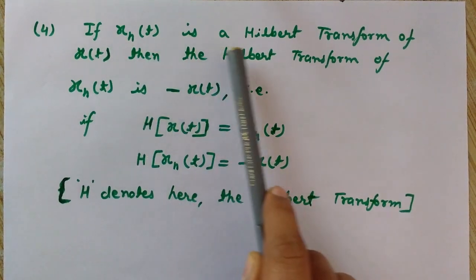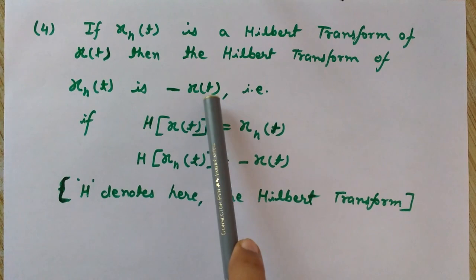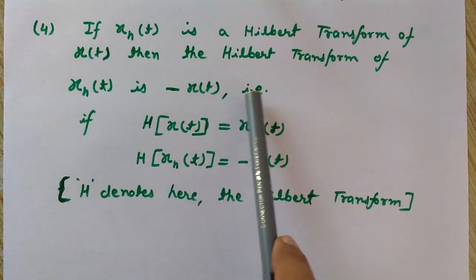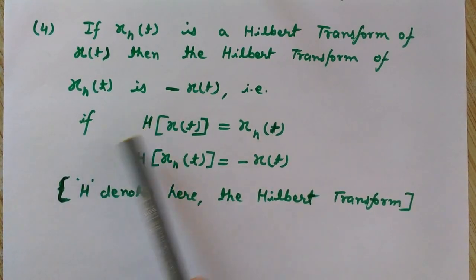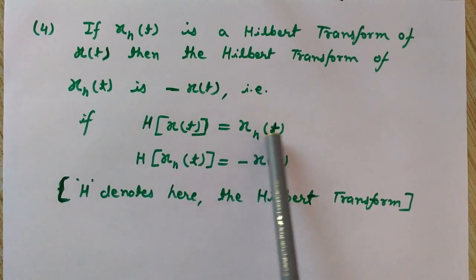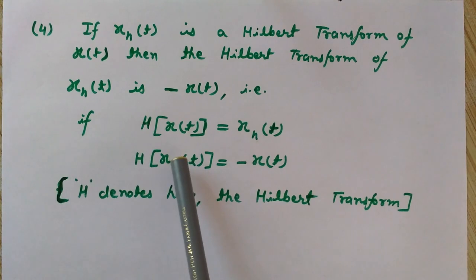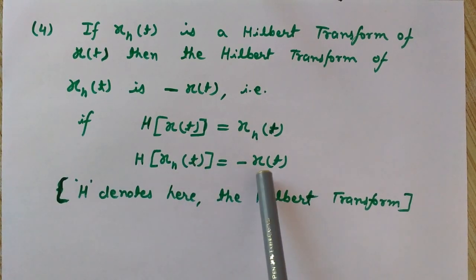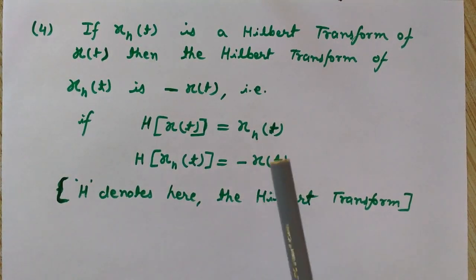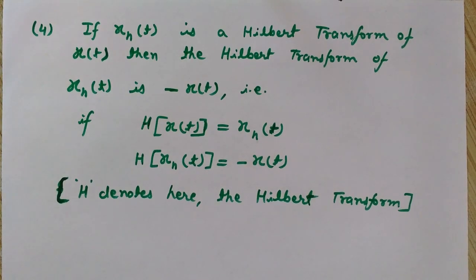The fourth property: if x̂(t) is the Hilbert Transform of x(t), then the Hilbert Transform of x̂(t) is minus x(t). That is, if H{x(t)} = x̂(t), then H{x̂(t)} = −x(t). So if you take the Hilbert Transform of the Hilbert Transform of a signal, you get back the negative of the original signal. This is a very important property.